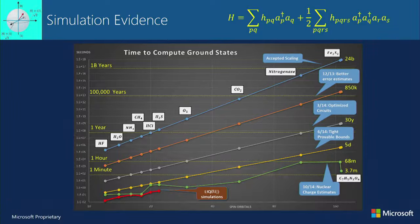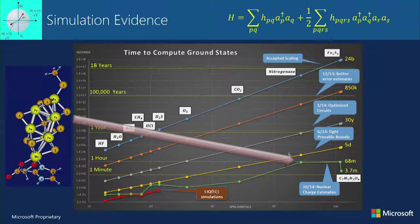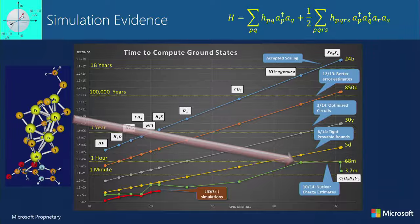We also have another paper in progress working on nitrogenase — that's the molecule I mentioned for fertilizer at the beginning. Notice it has a bunch of iron atoms and a molybdenum. You can't do this on a classical machine, so we're working with quantum chemists to figure out how we would simulate this on a quantum computer and how long it would really take to get the answer to a real problem, not just a challenge problem.